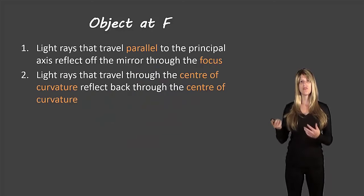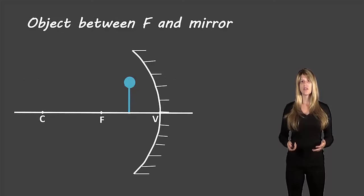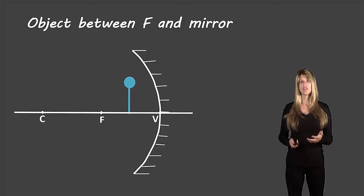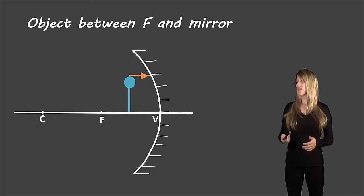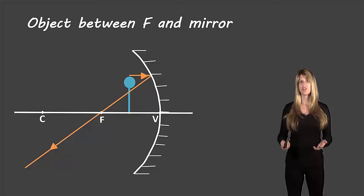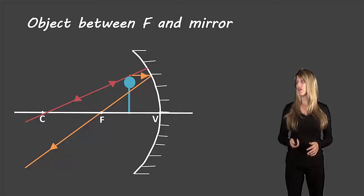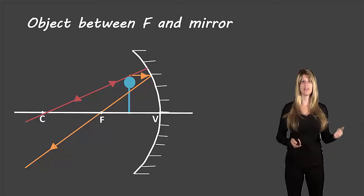Again, here are the rules — feel free to pause and write them down. Now let's look at the final location: when the object is between F and V. This one is a little more tricky, so pay close attention. We start with the first rule: if the light ray is parallel to the principal axis, it reflects through F. The second rule is that if light came from C and touches the top of the balloon, it will reflect back along the same line.